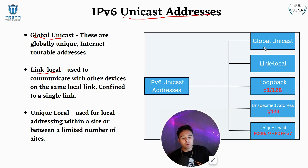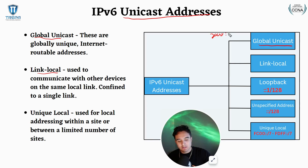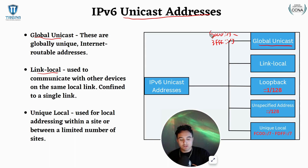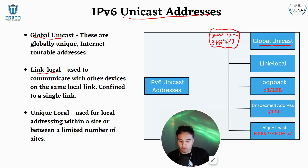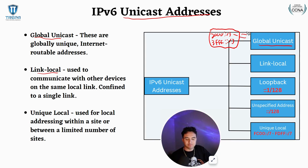A global unicast address is going to be within the range of 2000 to 3FFF in the first hex. So on the exam, if you see an IPv6 address that falls within this range, that is going to be a global unicast address. Then we have our link local addresses.